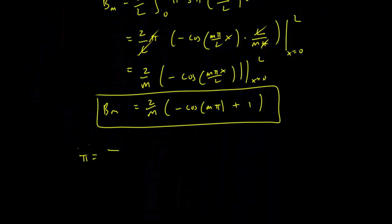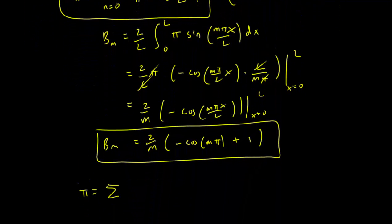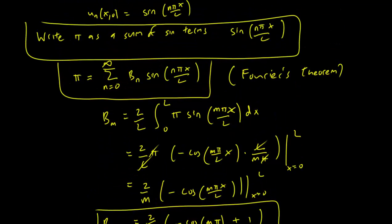And now all we have to do is to plug it back in the Fourier's theorem. Pi is equal to the sum, we know that B_n is this term. It's going to be from M equals 1 to infinity, 2 over M, minus cosine(m pi) plus 1, multiplied by sine(m pi x over L).